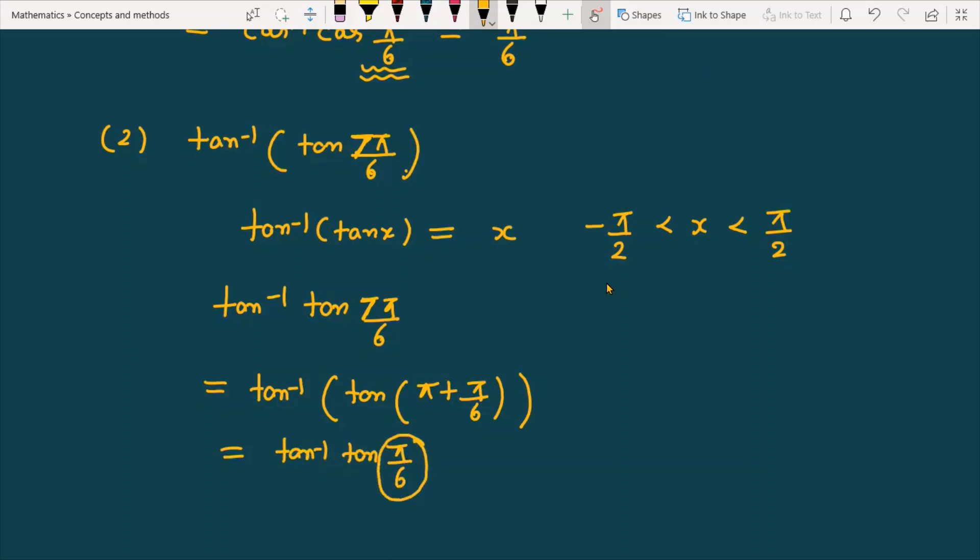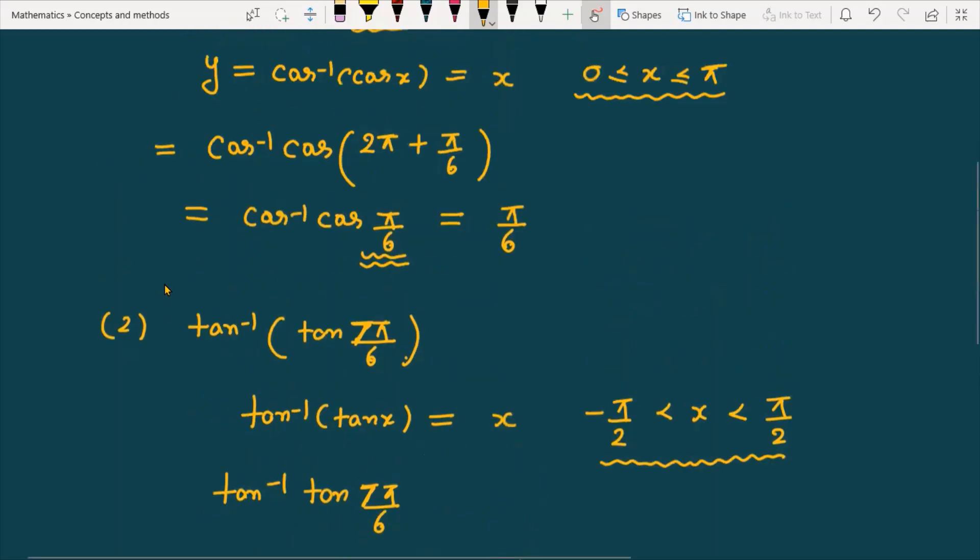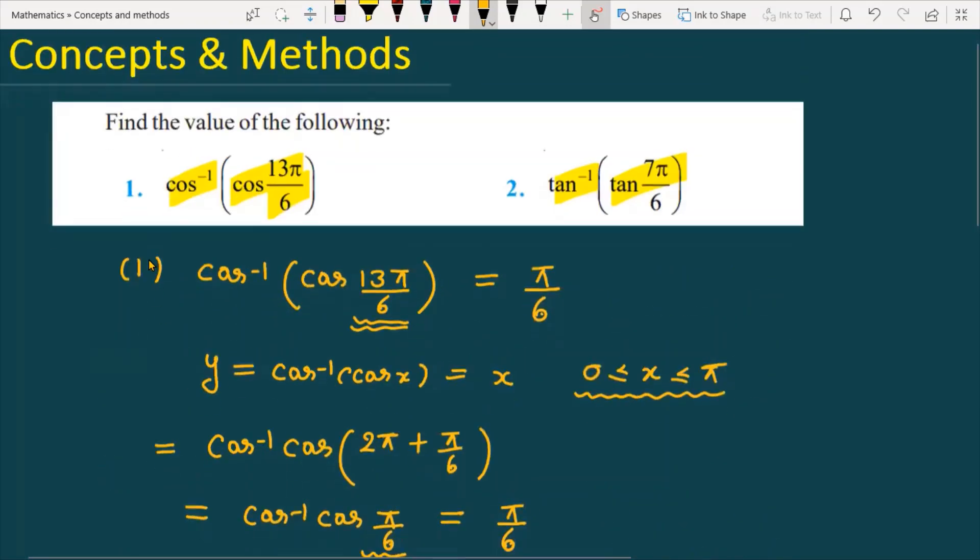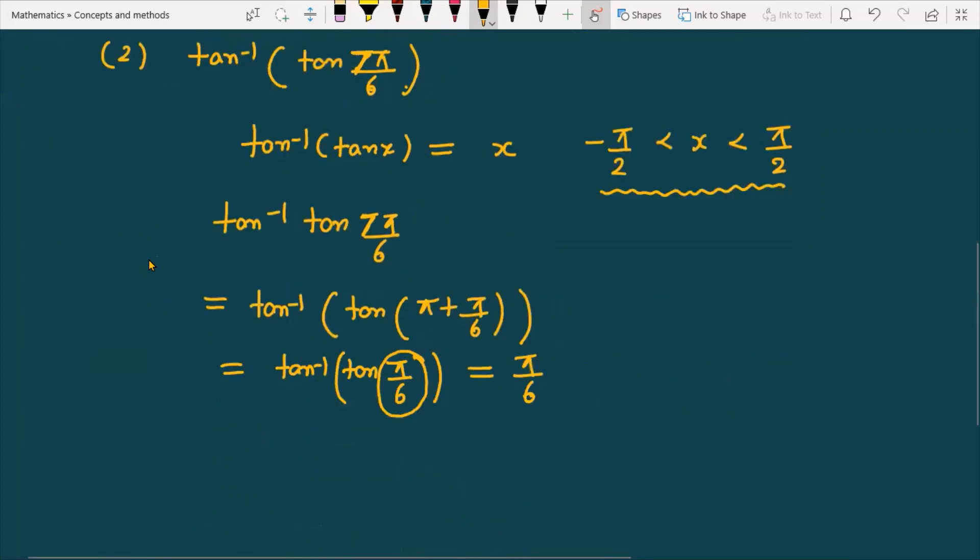This angle π by 6 now lies in the open interval between minus π by 2 and π by 2. In this case, if it lies in this open interval, then you can directly replace it with π by 6. So the first question's answer is π by 6, and the second question's answer is also π by 6.